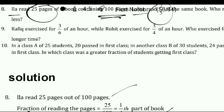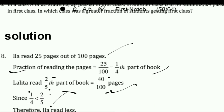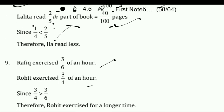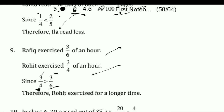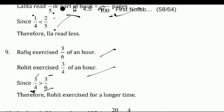Next: Rafiq exercised for 3 by 6 of an hour, while Rohit exercised for 3 by 4 of an hour. Who exercised for a longer time? The fractions are 3 by 6 and 3 by 4. Since both have the same numerator but different denominators, the smaller denominator gives the greater fraction. Therefore Rohit exercised for more or longer time than Rafiq. The next question you can do yourself.